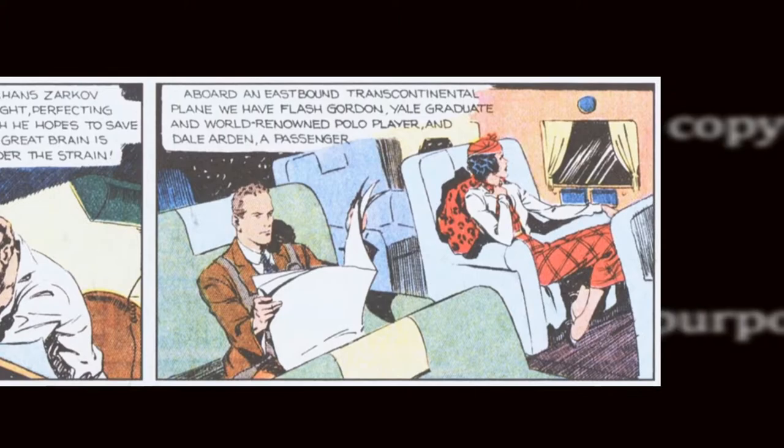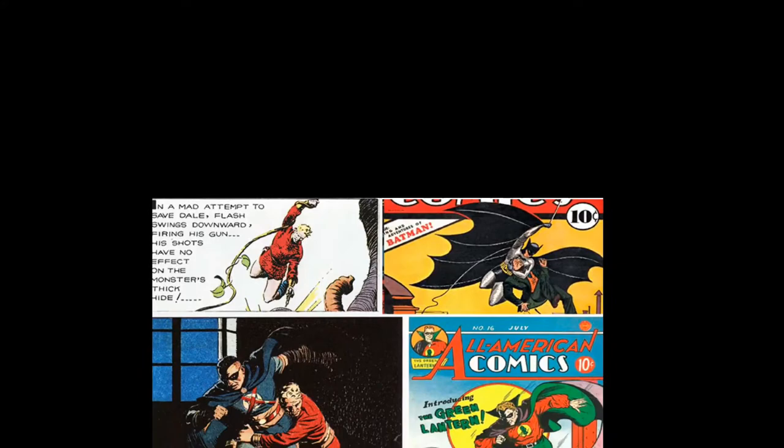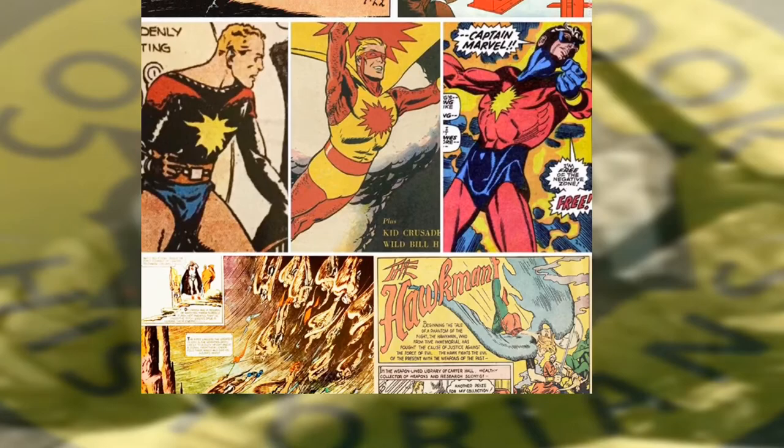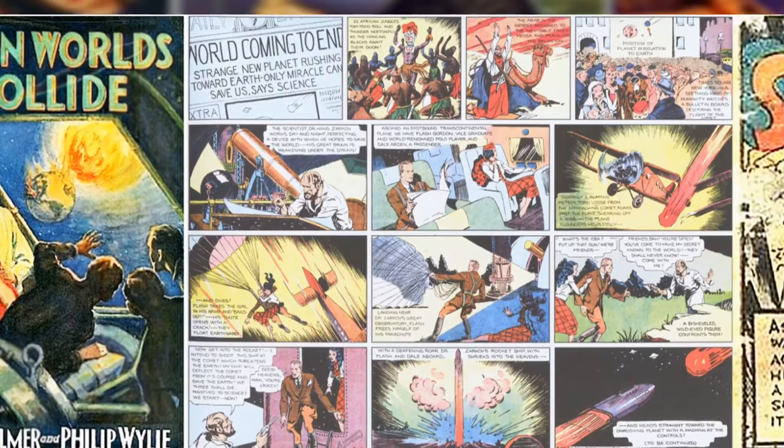As we discussed in the newspaper strip to comic book episode, there were several characters and costumes from Flash Gordon that were later emulated for comic books during the Golden and Silver Age, including Batman, Green Lantern, Captain Marvel, and Hawkman. Additionally, they tried to rocket from a doomed planet to a habitable one, which is used by Jerry Siegel in Superman's origin story.